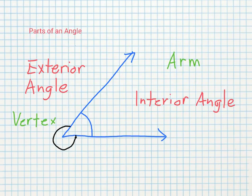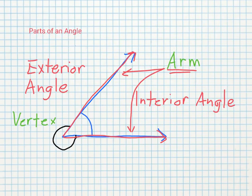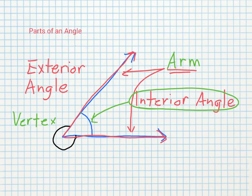I've drawn an angle here — this is an acute angle — and you'll see that I've marked various parts. I have some key vocabulary to identify. Let's start with the arms. These straight lines that come along on any angle are called the arms.